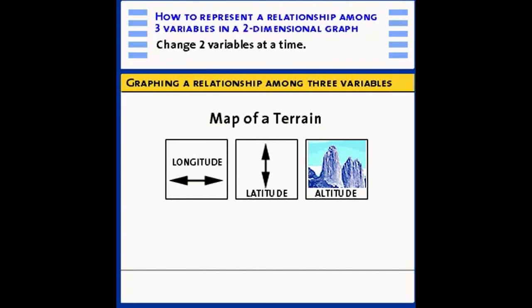As you move through a terrain, all three variables are changing: east-west, north-south, and height above sea level. So when we draw a map, how do we represent these three variables?